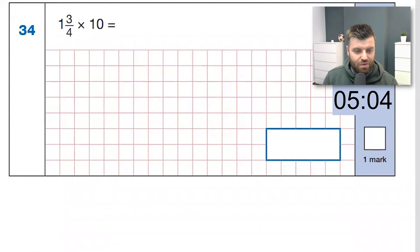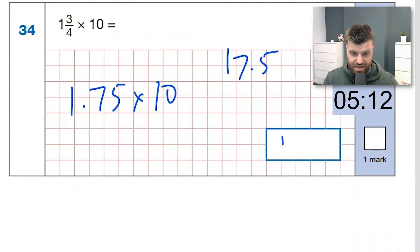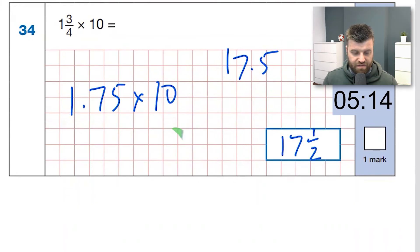Next one. I'm going quick. One and three quarters times ten. Well, I know that's the same as one-point-seven-five times ten, because that's the same as a decimal. So that's seventeen-point-five. We're going to put it back as a fraction, because the question's in a fraction. We'll do seventeen and a half is our answer.